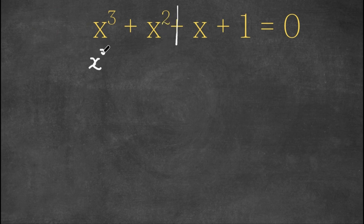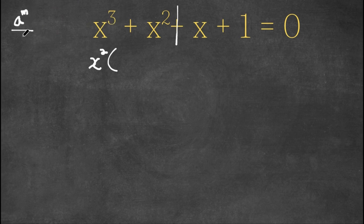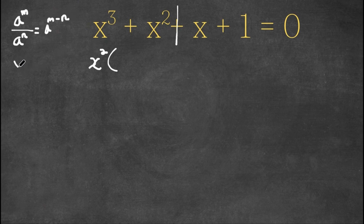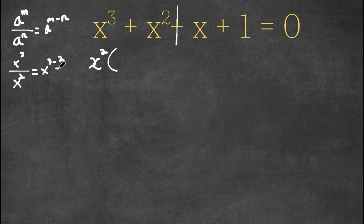So if we factor out x squared from x to the power of 3 plus x squared — x to the power of 3 divided by x squared — well, if we have a to the power of m over a to the power of n, this is equal to a to the power of m minus n. So x to the power of 3 over x squared equals x to the power of 3 minus 2, which is simply x. And x squared divided by x squared is simply just 1, because anything divided by itself is 1.